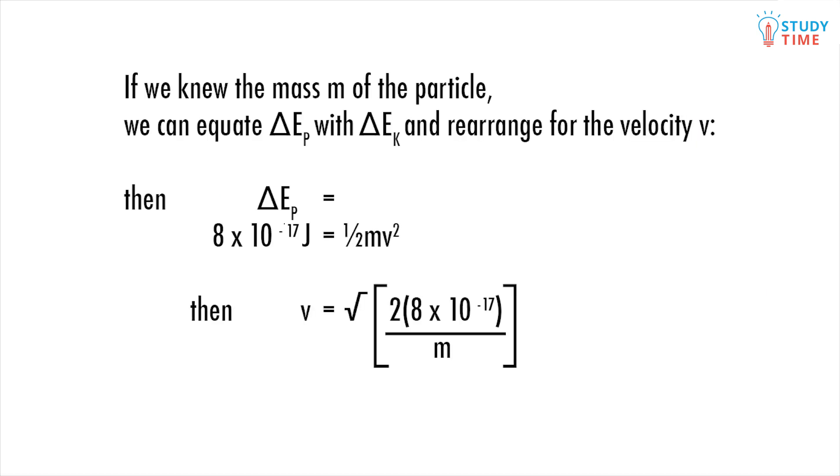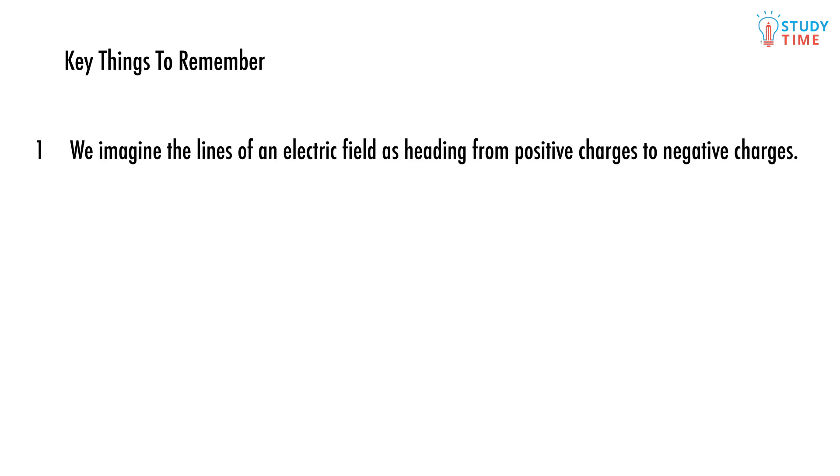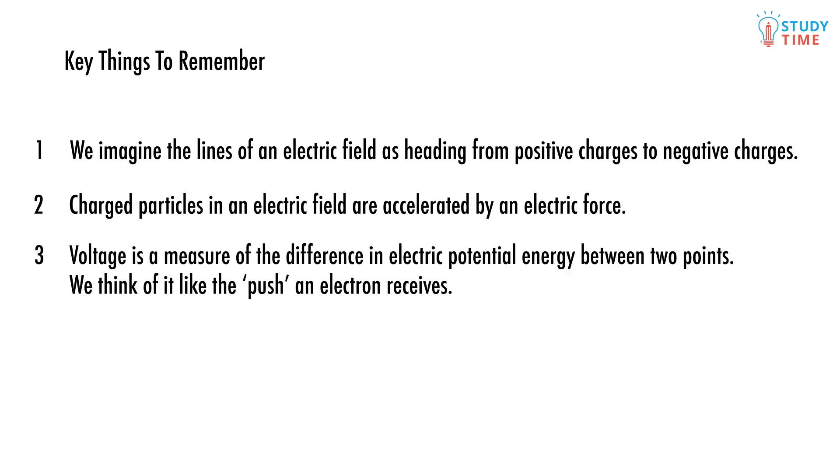What's really interesting is that as the charges move, their electric potential energy is converted into kinetic energy. We can borrow the kinetic energy equation E equals half mv squared from mechanics, equate the potential and kinetic energies, and if we know the mass of the particle, we can figure out how fast it's going. Remember, we imagine the lines of an electric field as heading from positive charges to negative charges. Charge particles in an electric field are accelerated by an electric force. Voltage is a measure of the difference in electric potential energy between two points. We think of it like the push an electron receives.